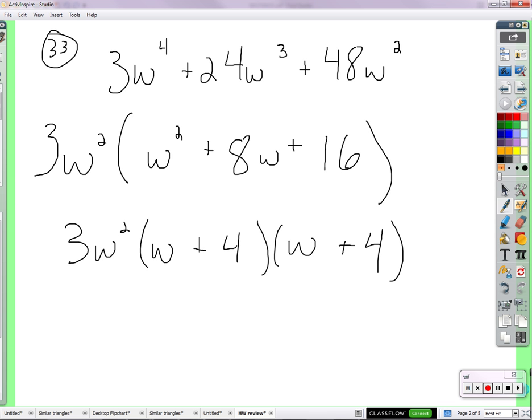The long way of double checking is just multiply these together. W times w is w squared. W times four is 4w. We get another 4w. That's 8w when we add it together. And four times four is 16.